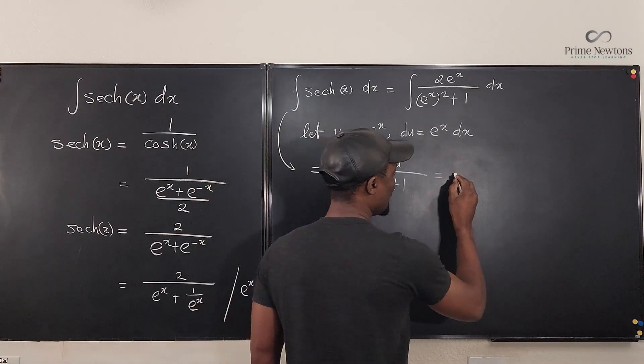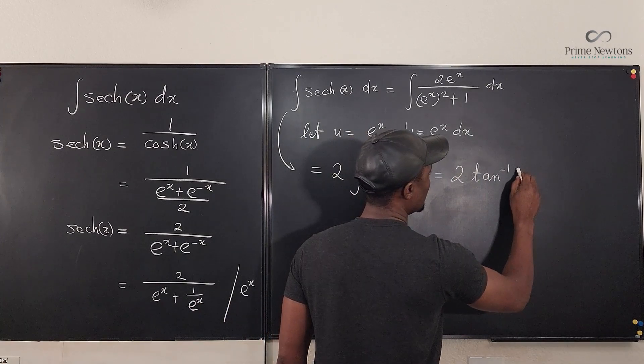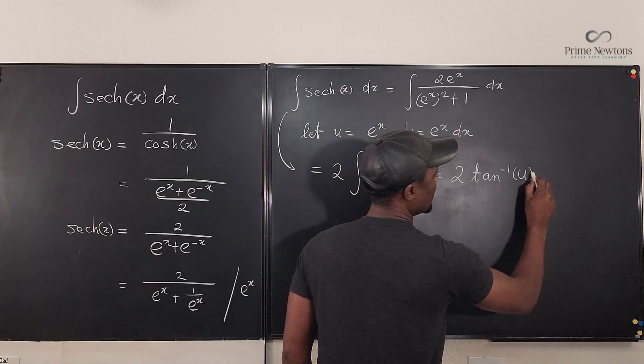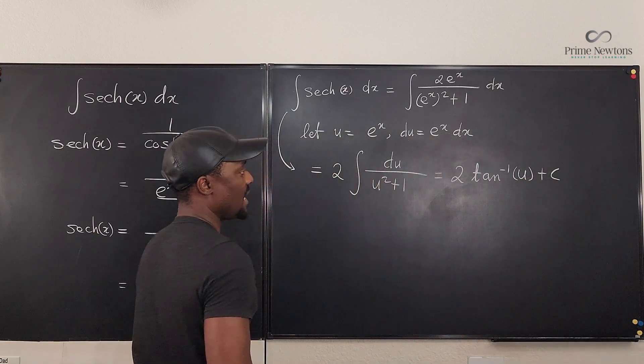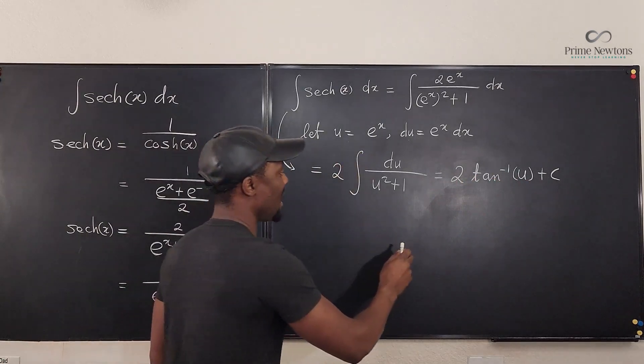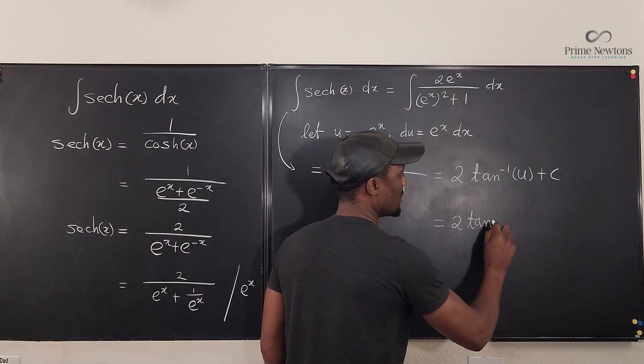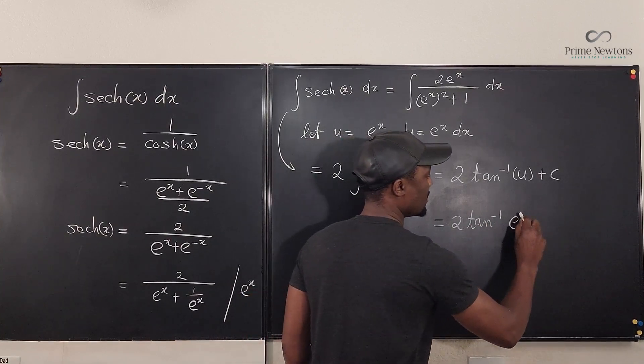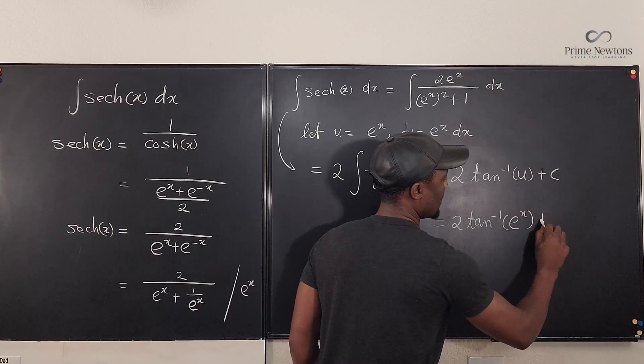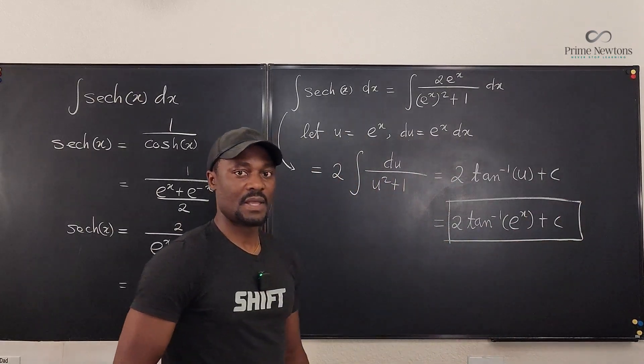Remember? It's arctangent. So my answer is 2 times the inverse tangent of u plus c. And I know what u was from the beginning. I said let my u be e to the x. So I have 2 times inverse tangent of e to the x plus c. That is the integral.